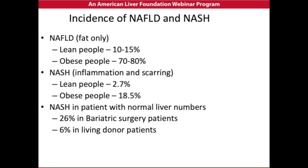Who has this condition? The most important thing to note is that lean people do have fat and inflammation in their liver, with 2.7% of them having this, whereas about 18.5% of obese people will have fat and inflammation in their liver. There is a small group who have been identified with normal liver enzyme numbers and still have fat and inflammation on biopsy — because they were donating their liver or having bariatric surgery. So looking at liver enzymes is usually the best way to identify this condition, but occasionally there are people who have fat in their liver not identified by simple blood tests.